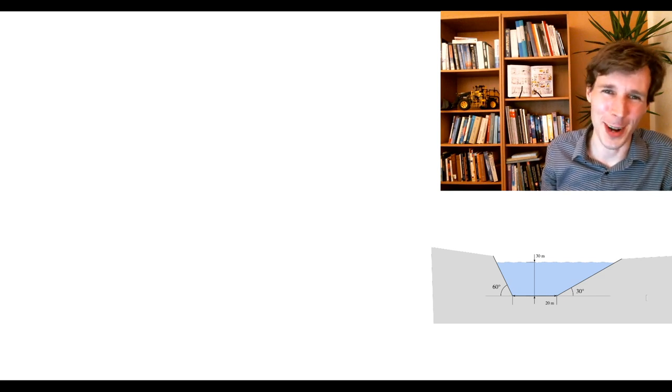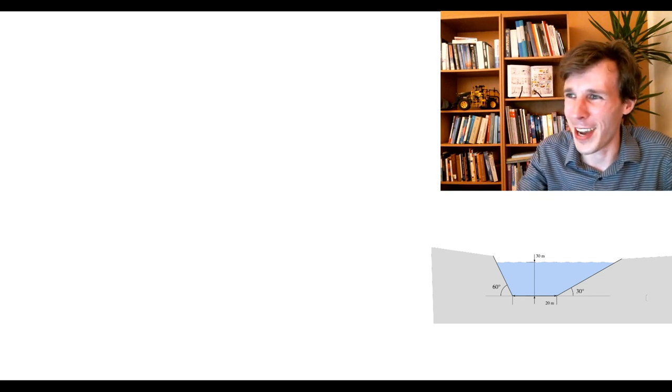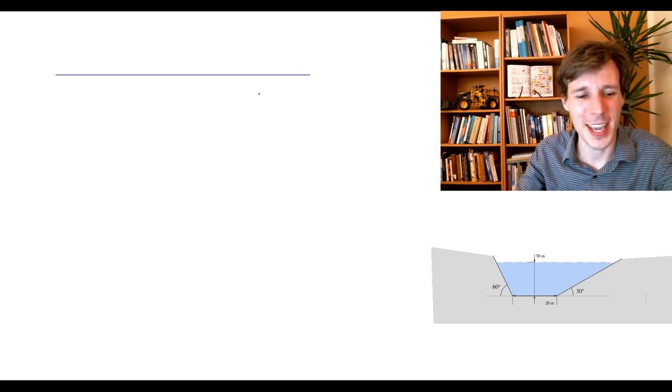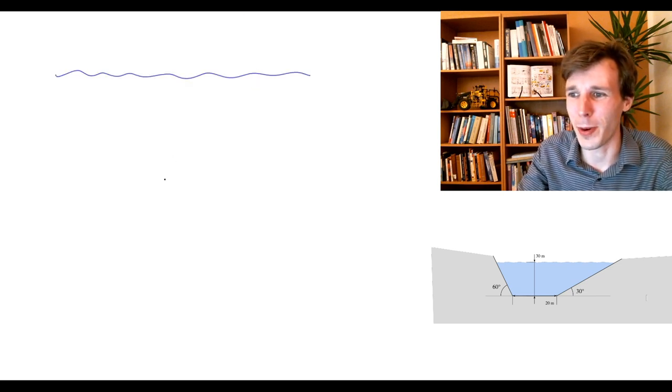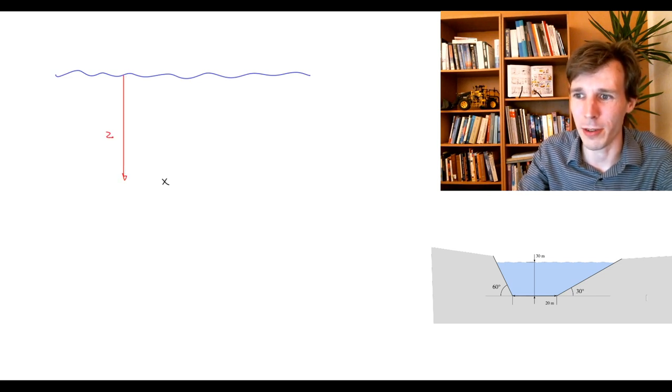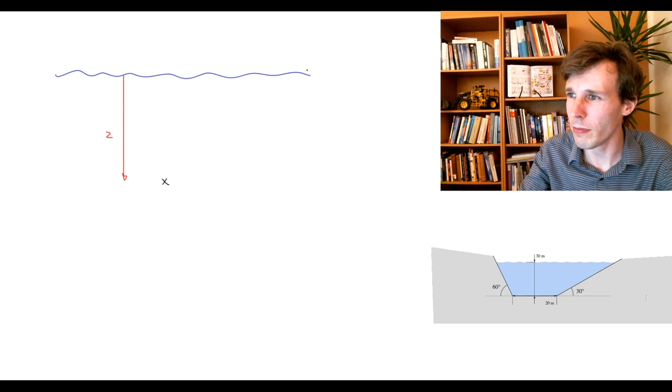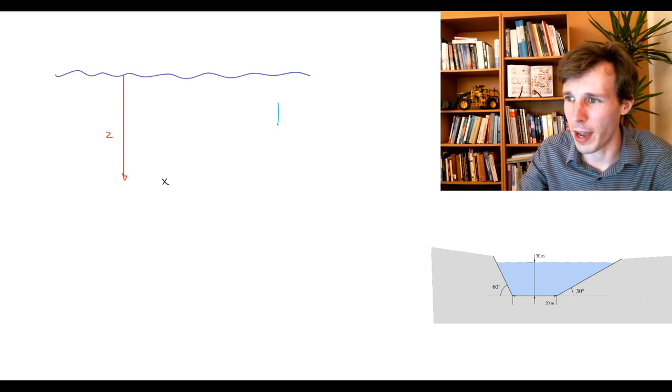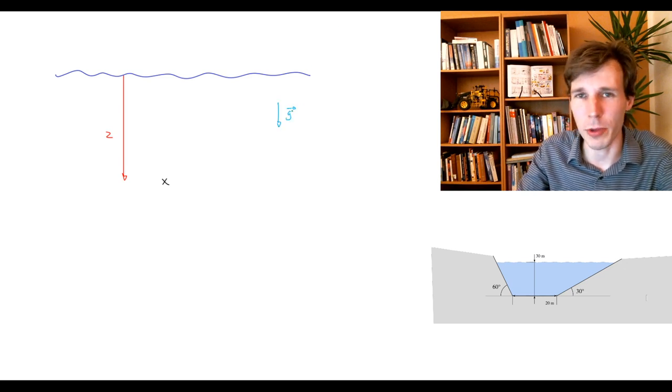So let me show you how to solve this problem. You have the water surface on top, and then you have your point, which is down there, and this point is at a distance away from the top, which is measured with a coordinate Z. At the same time, you have G, gravity, which is pushing downwards.